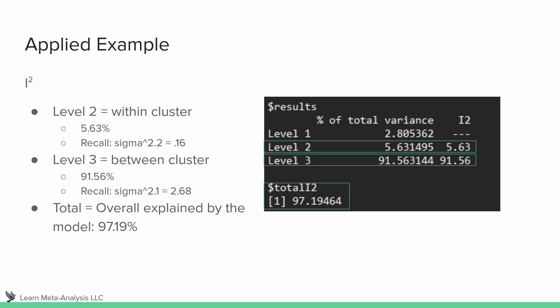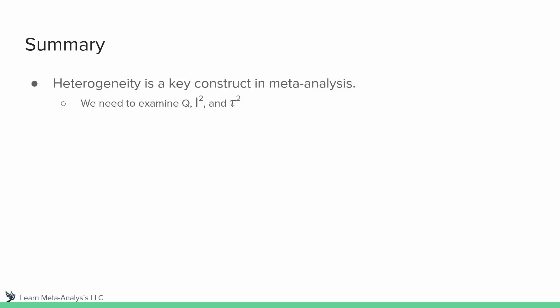The last thing displayed in our results is the total I-squared — the total amount of variation explained by our model. That's displayed at the bottom as 97.19%, which is a lot. So let's summarize, because we went through a bunch of different statistics here. What is the takeaway point?